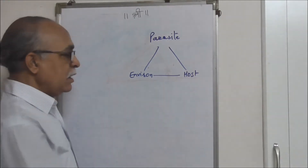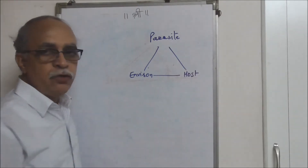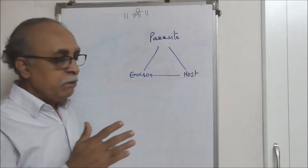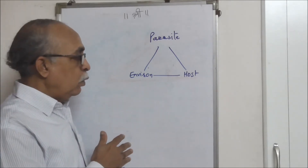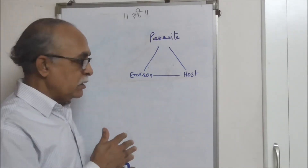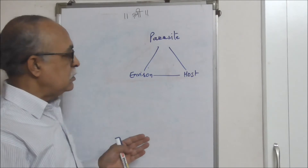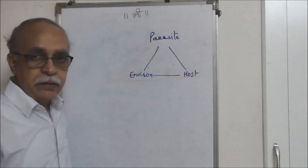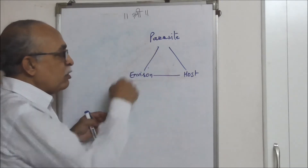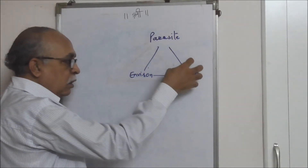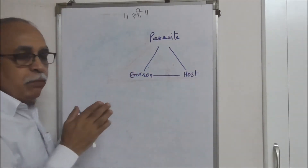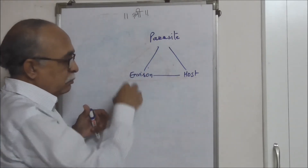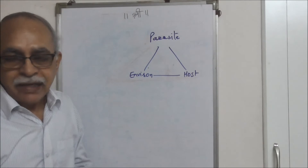Internal environment refers to the internal conditions of the host — what body temperature, what physiological state, what secretions — all these have to be specific for the parasite to invade it. So this triad — a parasite, a host, an environment — forms an essential system of the epidemiological cycle.